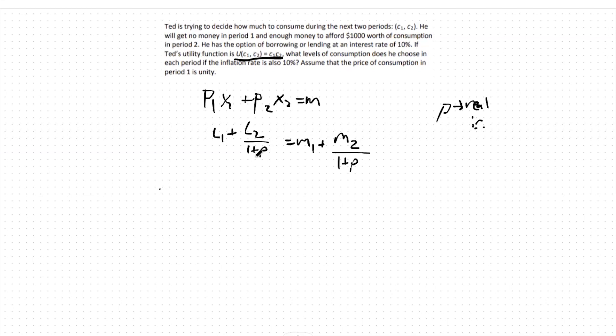That being said, there's a formula to figure out this rho variable. 1 plus rho equals 1 plus the nominal interest rate over 1 plus the inflation rate.